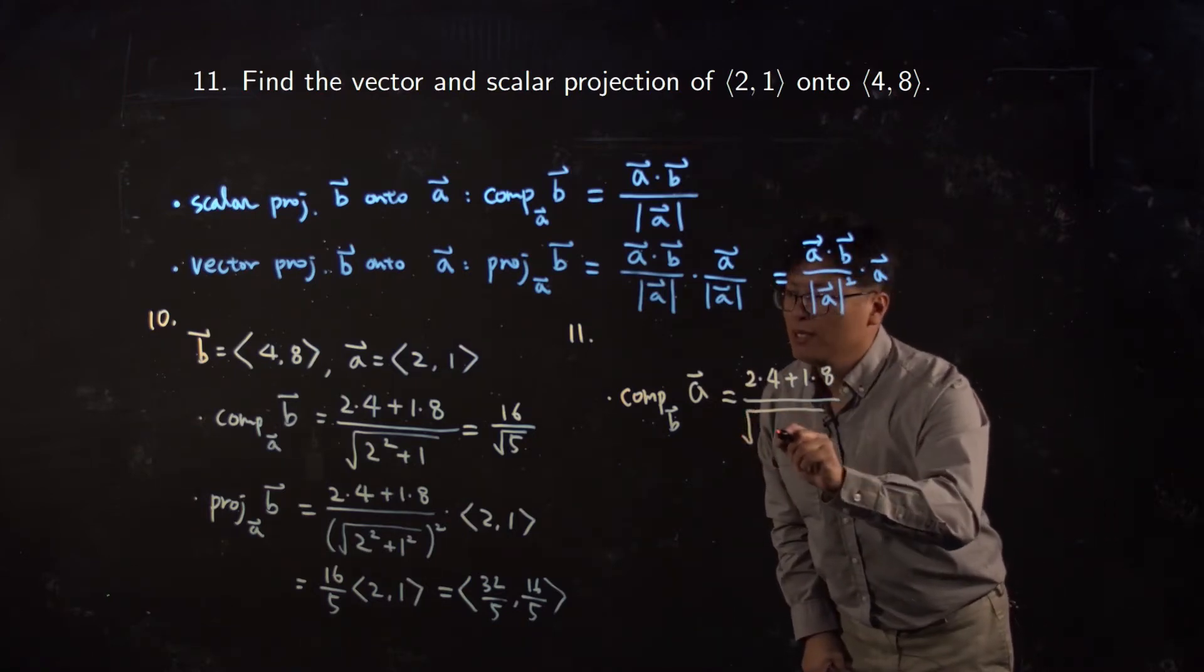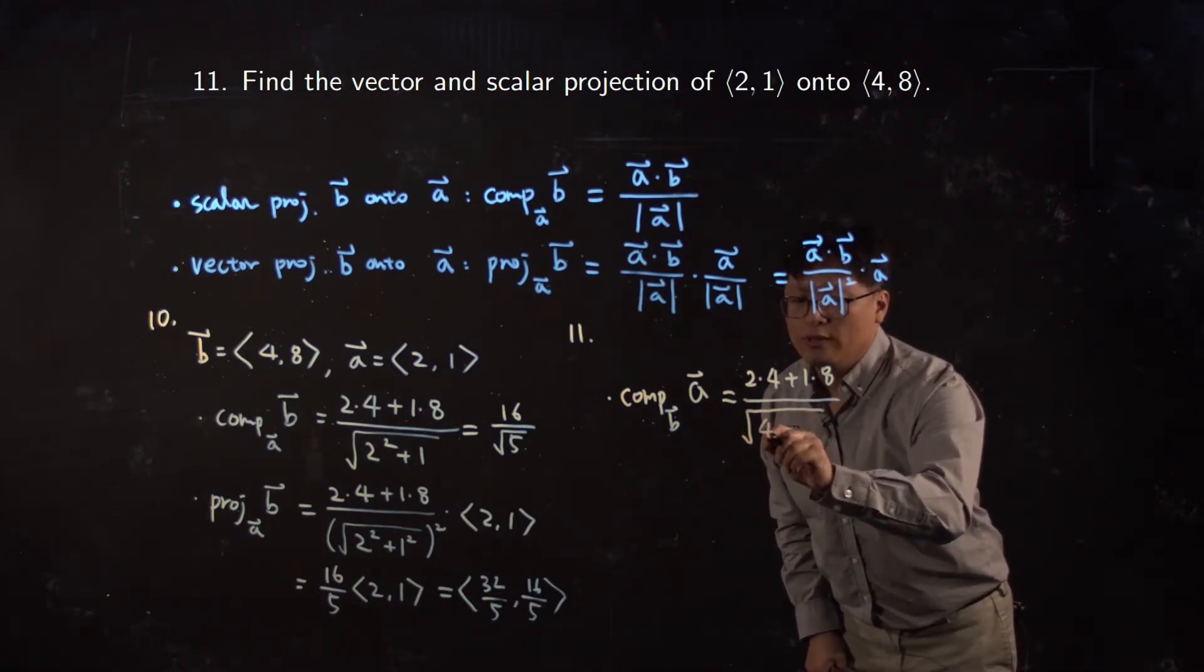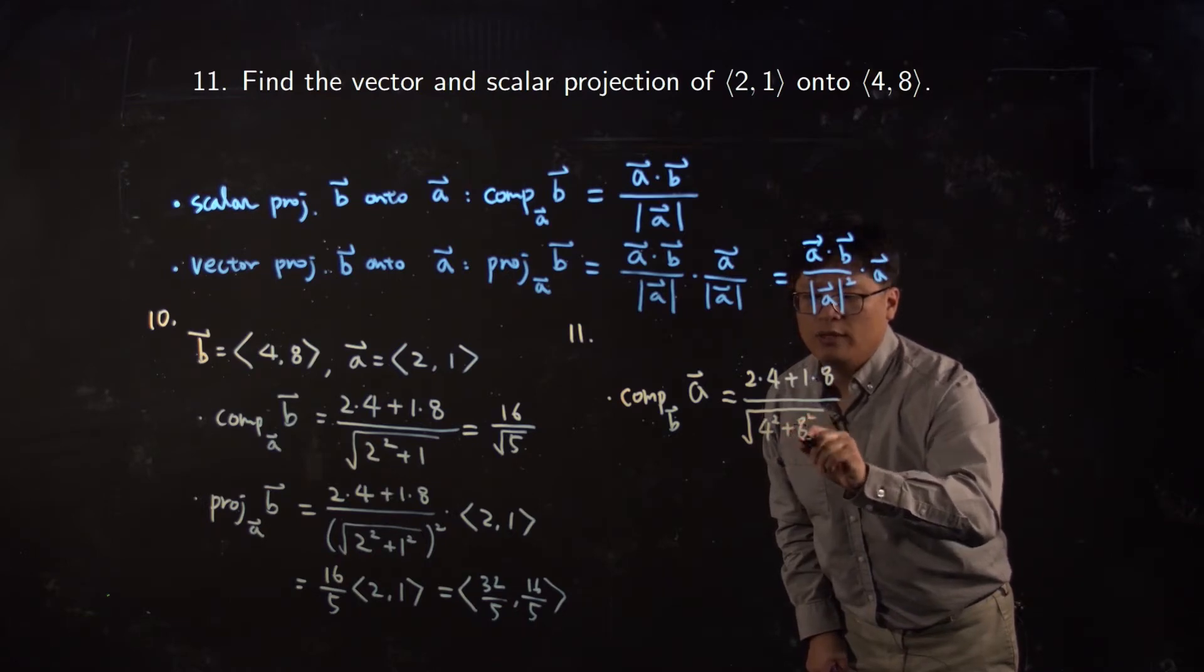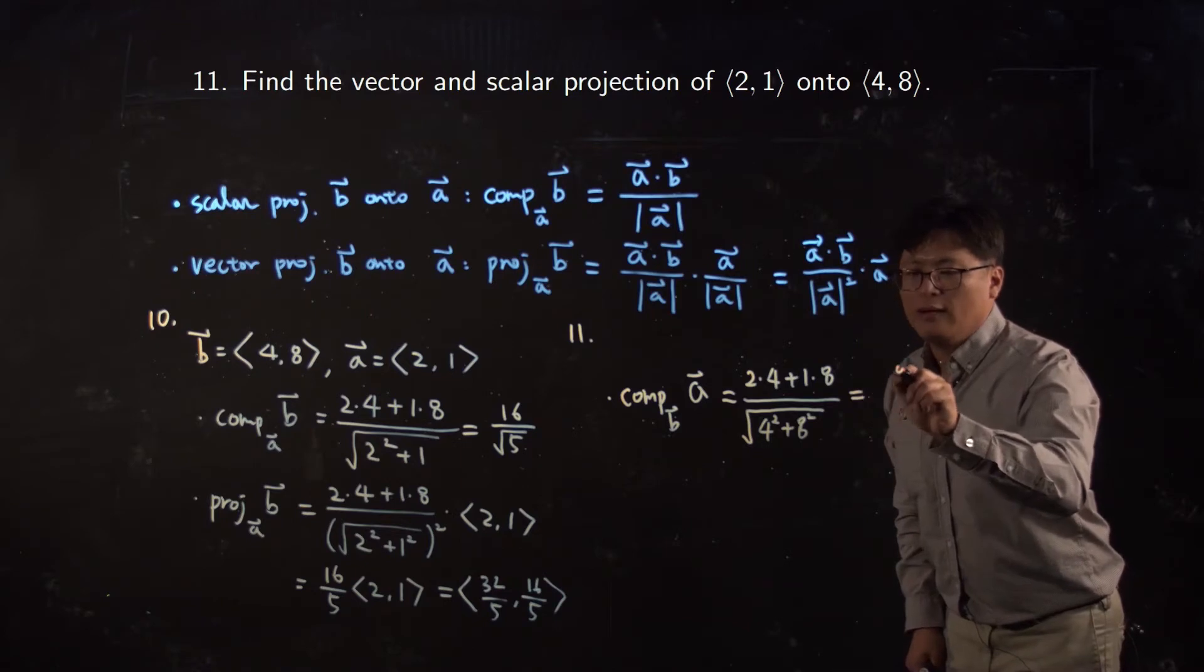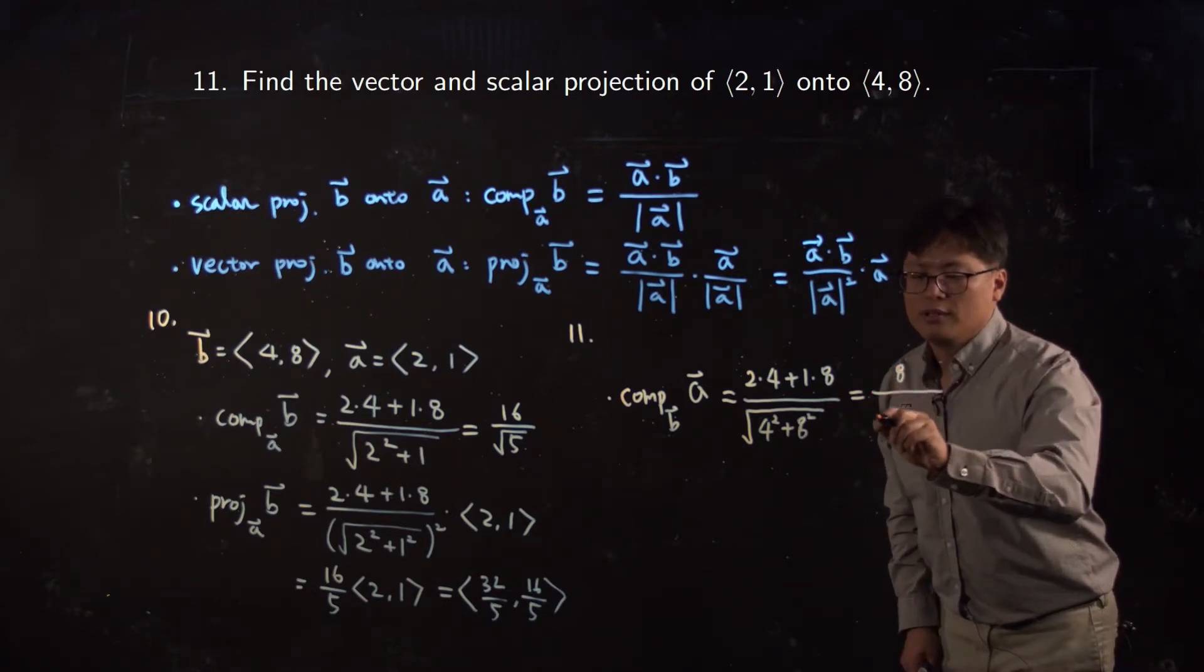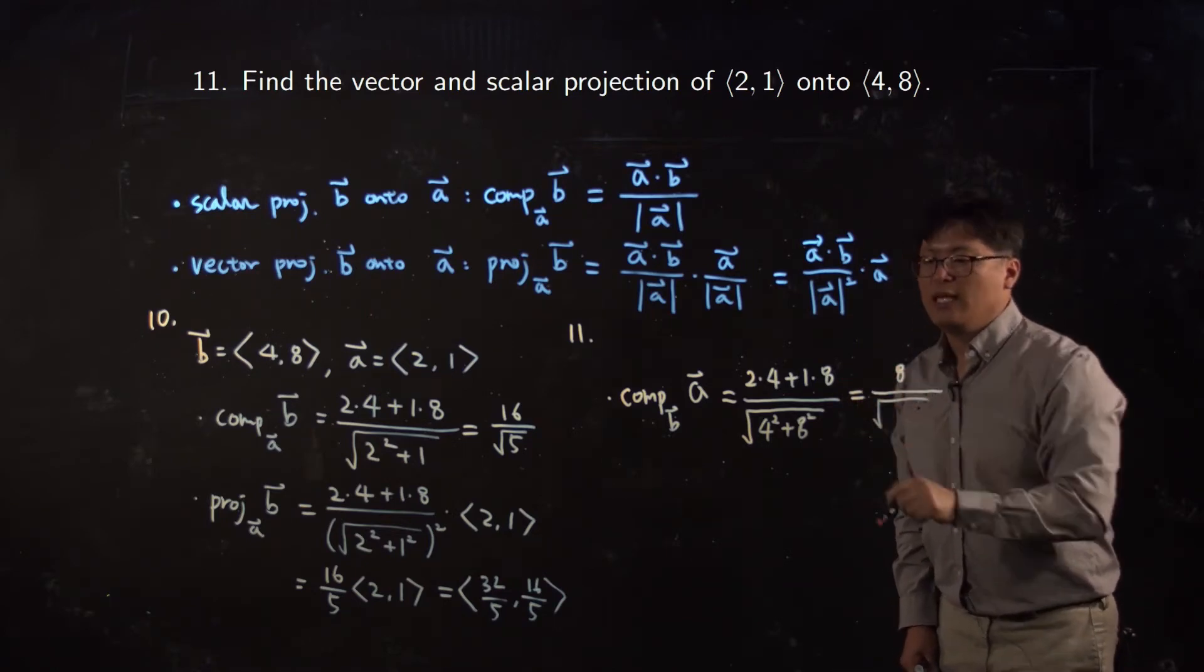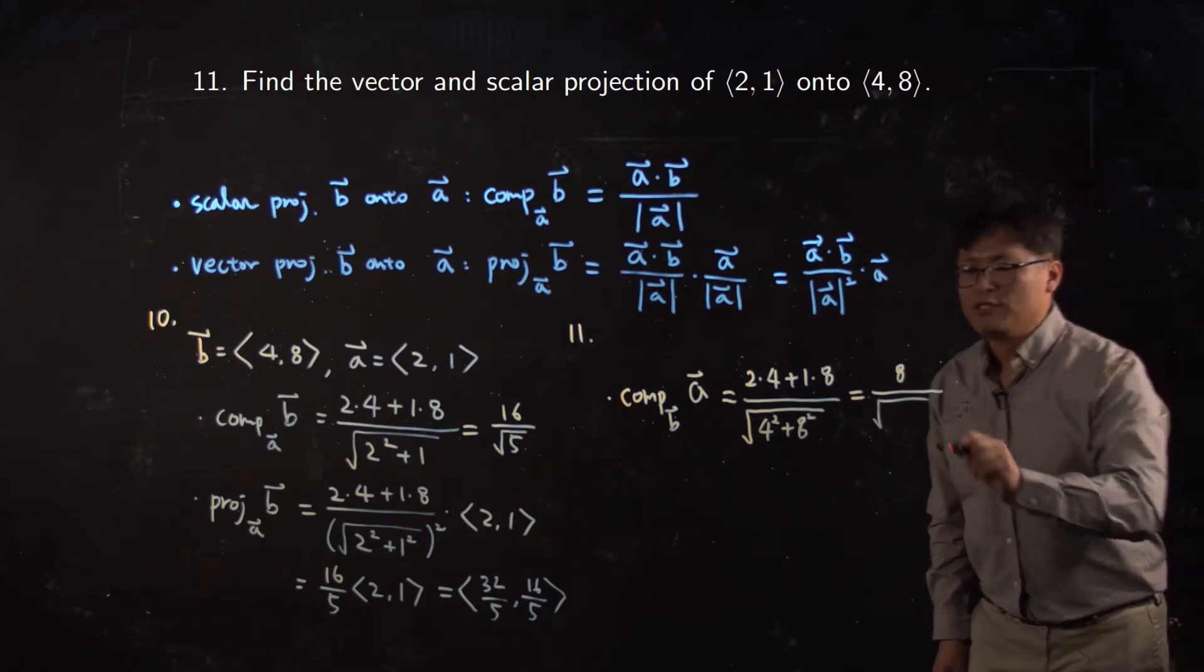8 squared. The numerator is still 8. It is equal to 8 over the square root of 16 plus 64, which is 80.